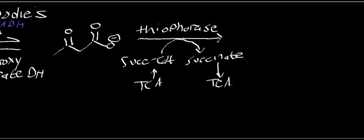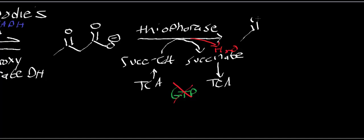Recall that succinyl-CoA turns into succinate via the enzyme succinyl-CoA synthetase. So what ends up happening is you bypass the production of a GTP, because succinyl-CoA synthetase normally produces a GTP. So if we're metabolizing ketone bodies, we lose out on the production of GTP. In this reaction, a water is kicked off and we generate acetoacetyl-CoA.